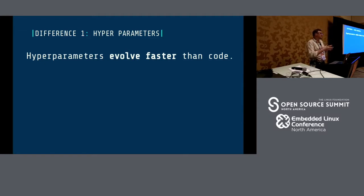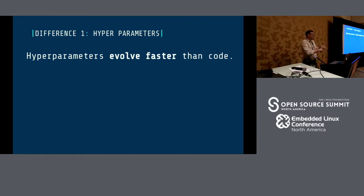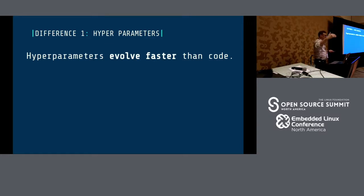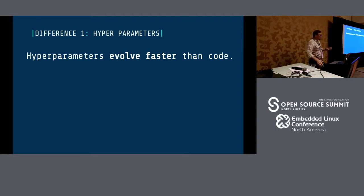Machine learning actually includes a few stages. We process and prepare our datasets for ML training first. Second, we develop our algorithms — we do the coding, a usual coding job. And then at a certain level, we do hyperparameter tuning, and then this cycle repeats. What is special about hyperparameters? The dynamics of the project change a lot at this stage, because instead of running one or two experiments a day, we start running dozens — sometimes even hundreds or thousands.